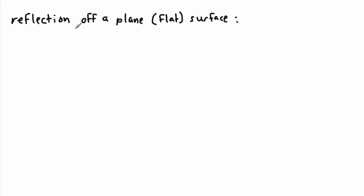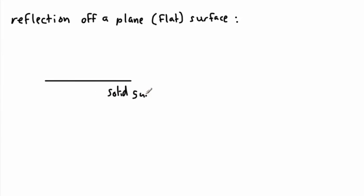More important — and used more often — is reflection off a plain surface. Let's say we have a solid surface. The solid surface could be anything; in this case I'm going to make it glass and bounce light off it. First, we have to draw what's called a normal: a dotted line that's perpendicular — 90 degrees to the surface. That's called the normal.